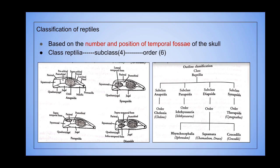As we discussed in our first session, the classification of reptiles is mainly based on the number and position of the cavities present in the skull, which are called the temporal fossae. Depending upon that, Class Reptilia is divided into four subclasses and six orders, classified based on the number and position of the fossae in the skull.